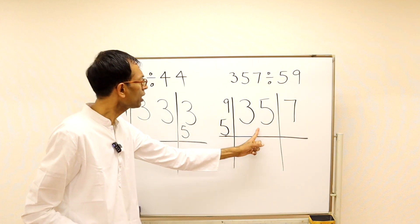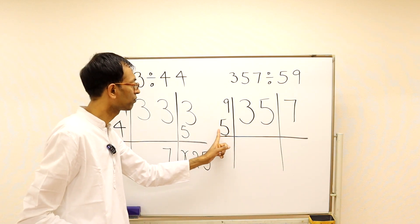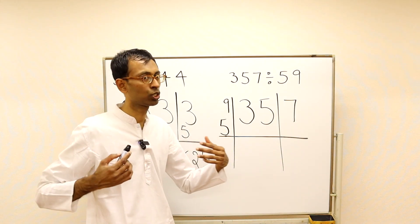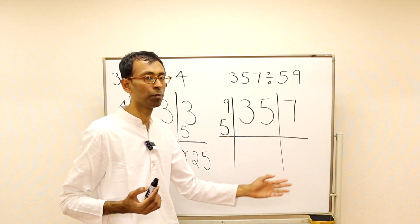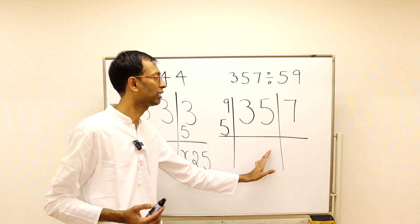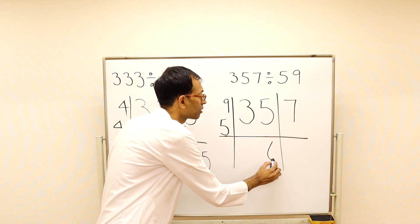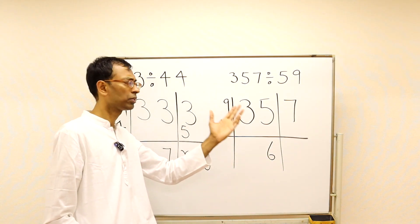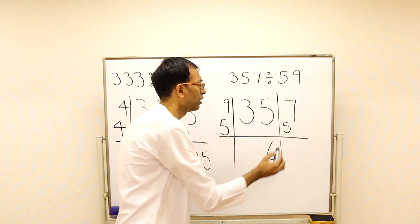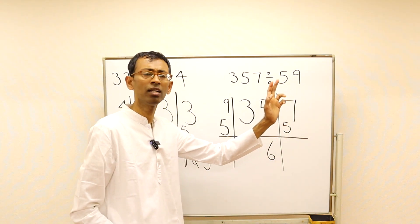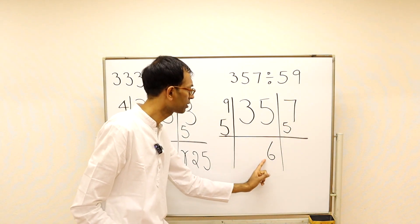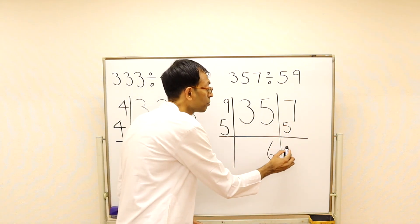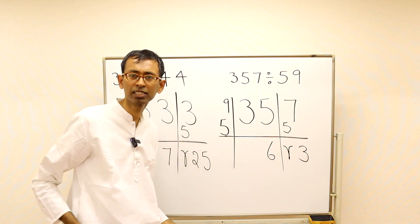For the second problem: 35 divided by 5 would be 7 remainder 0, but that gives a bar number. So instead use 6: 6 fives are 30, leaving remainder 5 from 35. That makes 57. Multiply: 9 times 6 = 54. Subtract: 57 minus 54 = 3. Answer: 6 remainder 3.